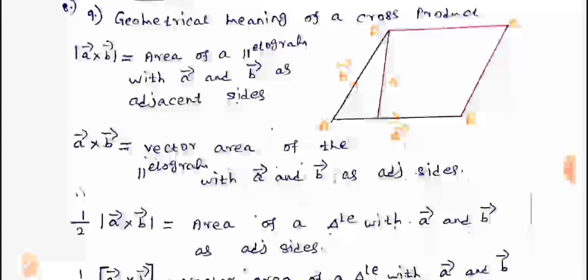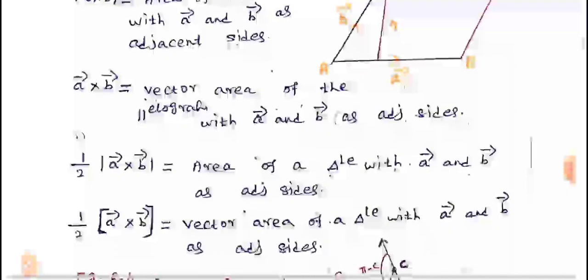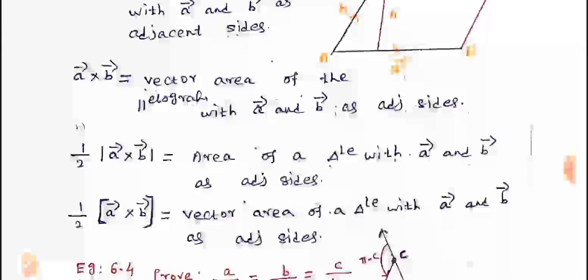Geometric interpretation: modulus of A vector cross B vector equals area of a parallelogram with A vector and B vector as adjacent sides. A vector cross B vector equals vector area of the parallelogram with A vector and B vector as adjacent sides. Also, one half times modulus of A cross B equals area of the triangle with A vector and B vector as adjacent sides. One half times A cross B equals vector area of the triangle.